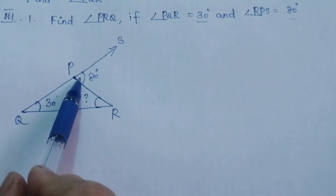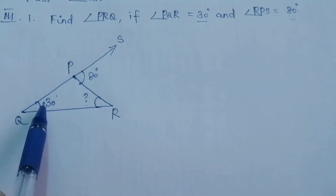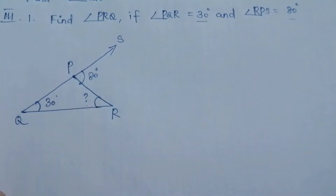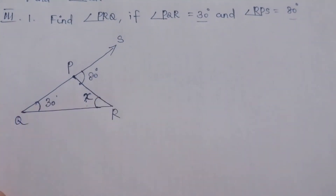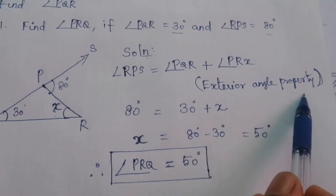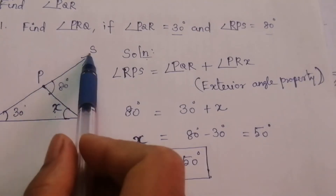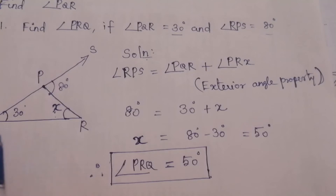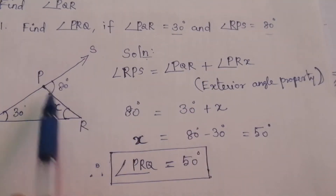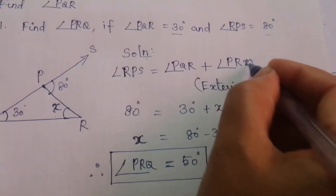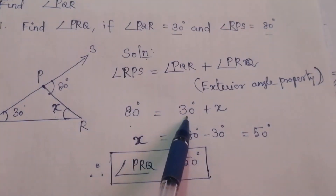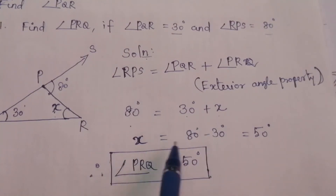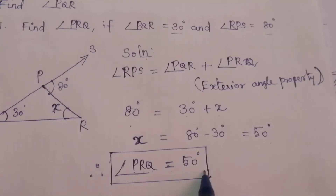We know the exterior angle is equal to the sum of the opposite interior angles. Taking angle PRQ as x, according to the exterior angle property: angle RPS = angle PQR + angle PRQ. So 80° = 30° + x, therefore x = 80° − 30° = 50°. The required angle PRQ = 50°.